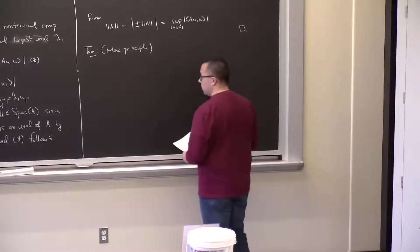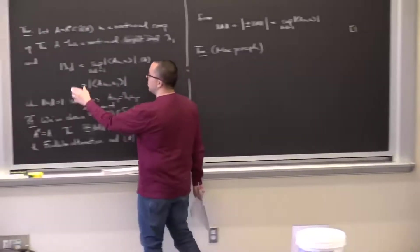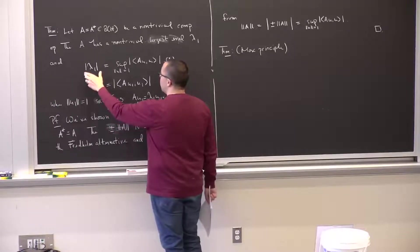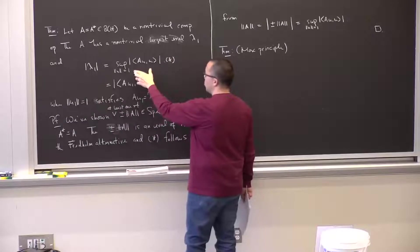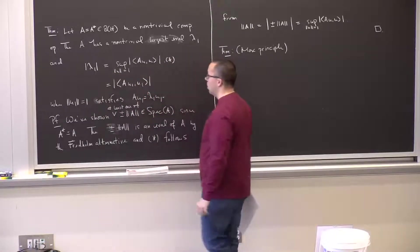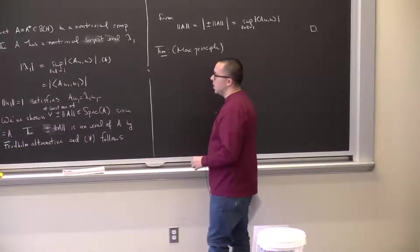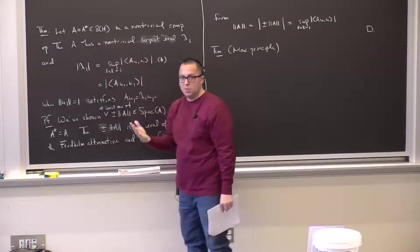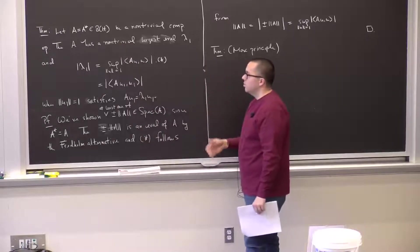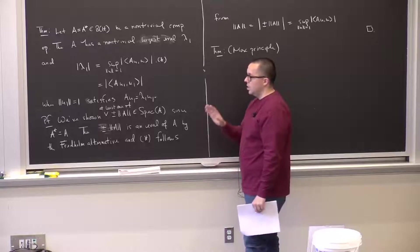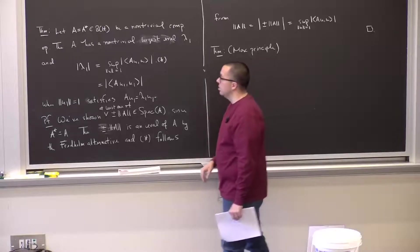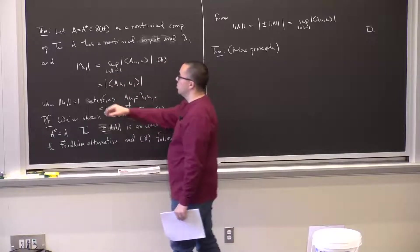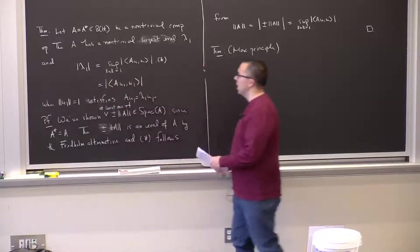This maximum principle gives a practical way to find or approximate the first eigenvalue of a bounded linear operator: it's a constrained maximization problem. You could choose a large but finite basis, restrict to that finite-dimensional span, and solve the approximate problem using Lagrange multipliers to get close to the eigenvalue and an approximate eigenvector.